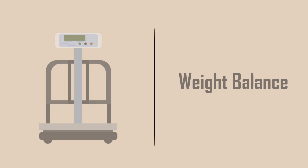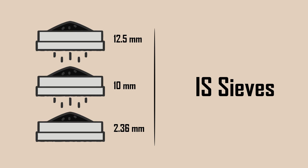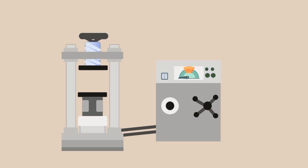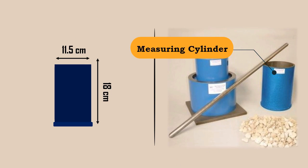IS sieves of sizes 12.5 mm, 10 mm and 2.36 mm. A compression testing machine and a measuring cylinder of size 11.5 cm in diameter and 18 cm in height.